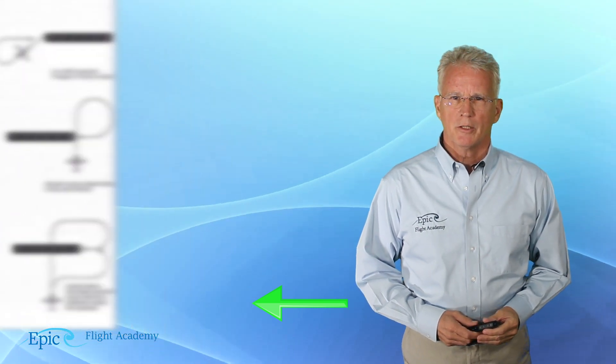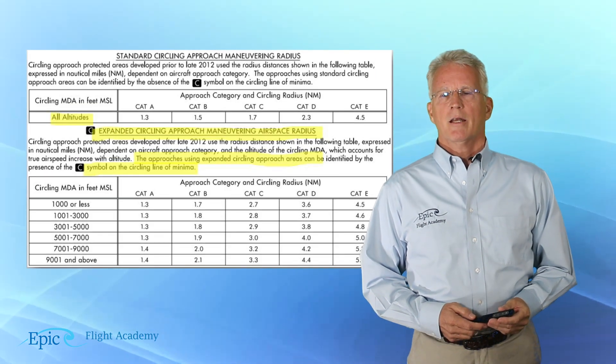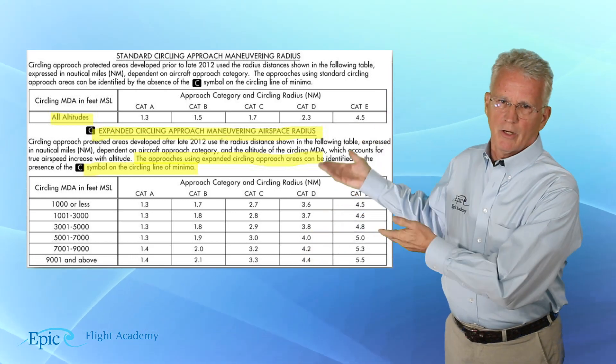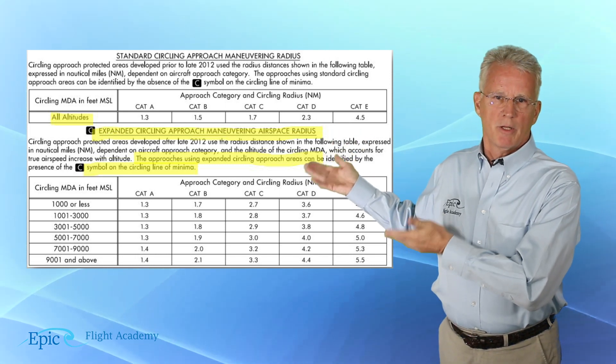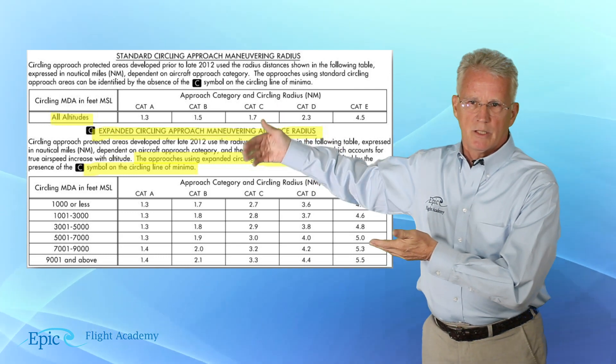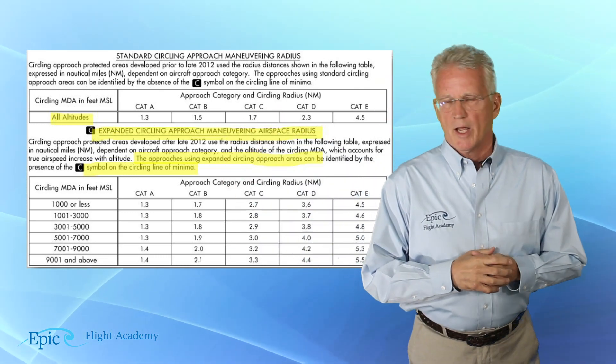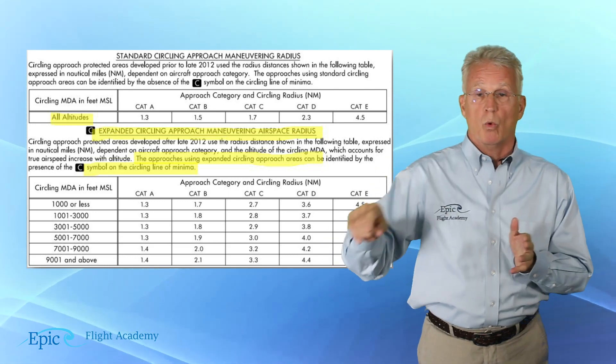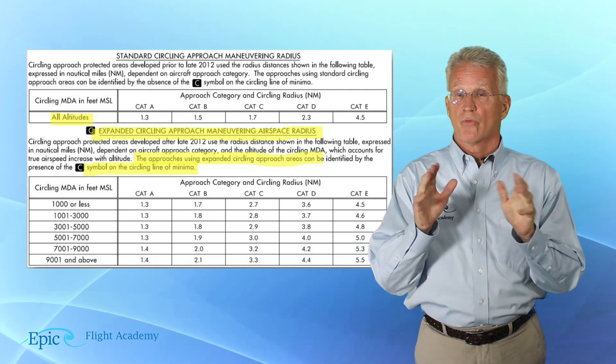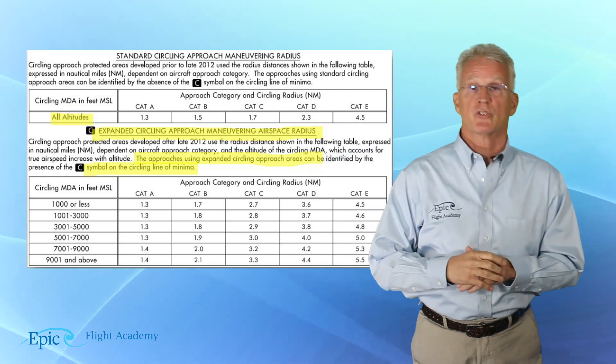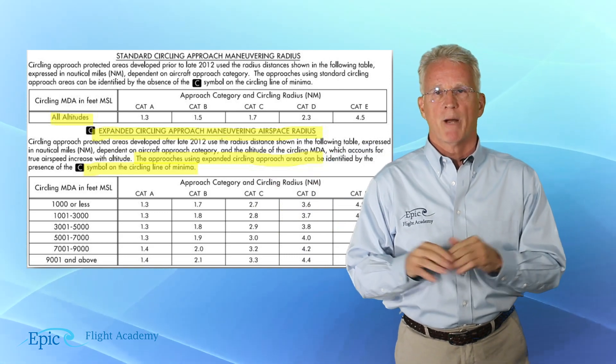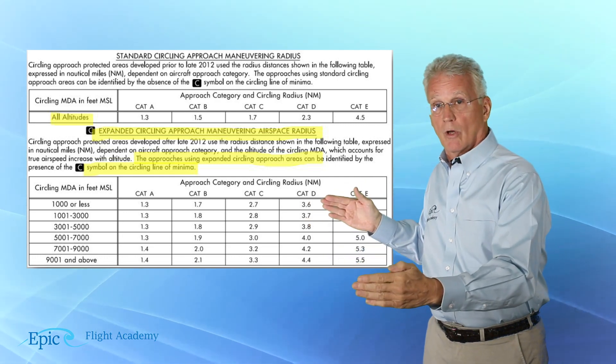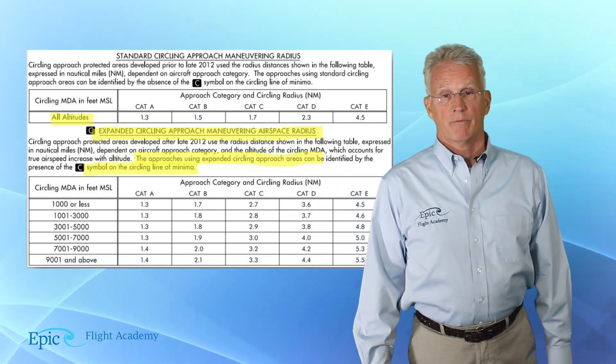Now these circling minimums can be found on your approach chart, and I want you to notice here at the top standard circling minimums for categories A, B, C, D, and E. For example, let's look at category B. The standard circling minimum is 1.5. Now this is nautical miles from the approach end of the runway. So when we say circling minimums, we're talking about, in this case, the distance, the lateral distance in nautical miles from the approach end of the runway.